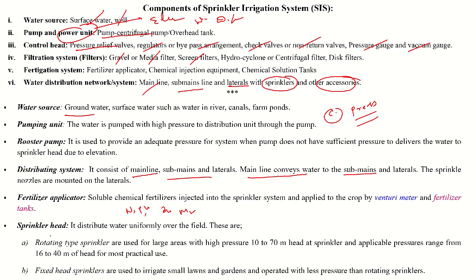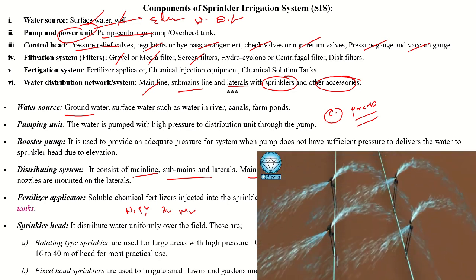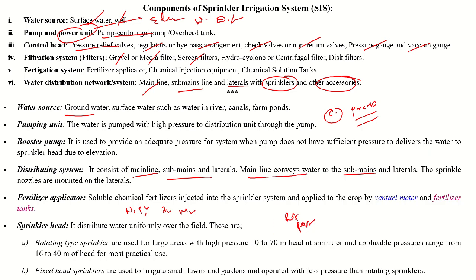There are two types of sprinklers: rotating and perforated. The rotating type sprinklers are used for large areas with a pressure head of 10 to 70 meters at the sprinkler, and an applicable pressure range of 16 to 40 meter head, mostly preferred in practical uses. Fixed head sprinklers are suitable for irrigating small lawns and gardens, used under less pressure.